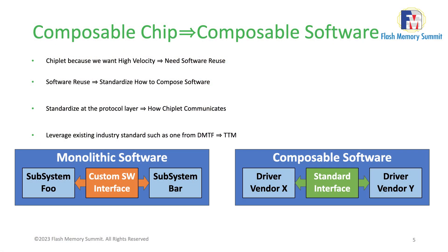We need to get away from that if we want composability at the software level too. One key idea with chiplets is high velocity chip design, and for that we need software to be ready at the same time. To achieve high velocity on the software side, we need to compose and reuse software. That means standardizing APIs and protocols — how you do X and how you do Y — so that both sides of the equation speak the same language.